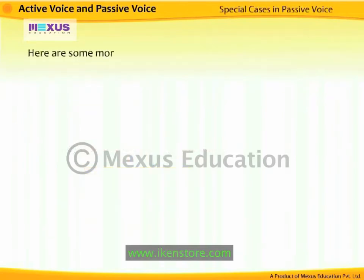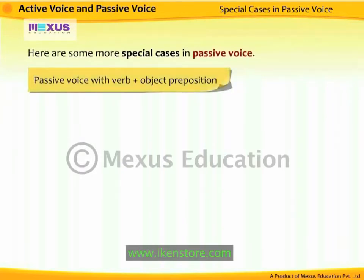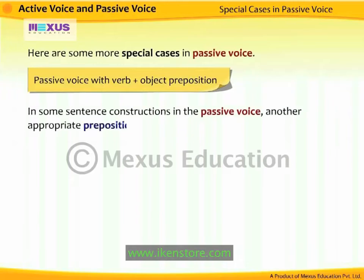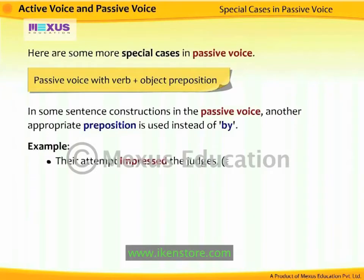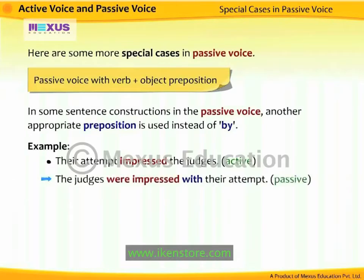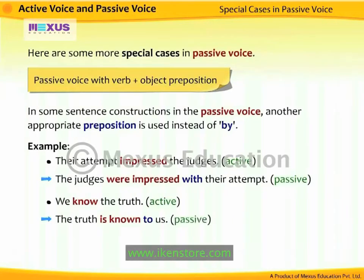Passive voice with verb plus object preposition: in some sentences, constructions in the passive voice use another appropriate preposition instead of 'by.' For example: 'Their attempt impressed the judges' becomes 'The judges were impressed with their attempt.' 'We know the truth' becomes 'The truth is known to us.' 'Simon married Rima' becomes 'Rima was married to Simon.'